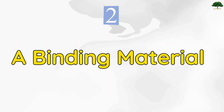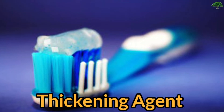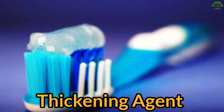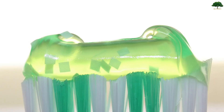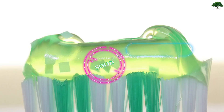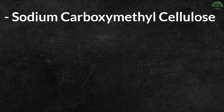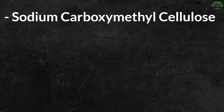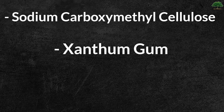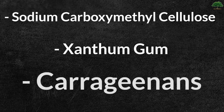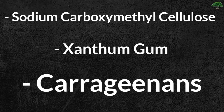The binding material or thickening agent keeps the solid and liquid components of toothpaste together so they don't separate. Examples include sodium carboxymethyl cellulose, xanthan gum, and carrageenans, etc.